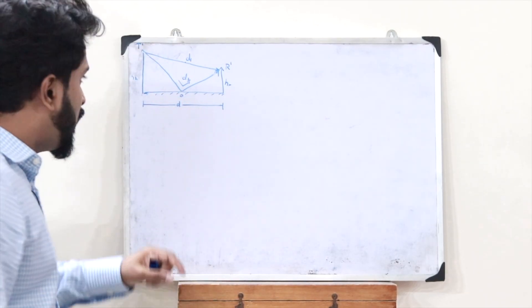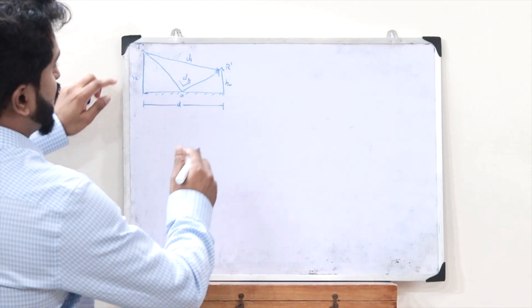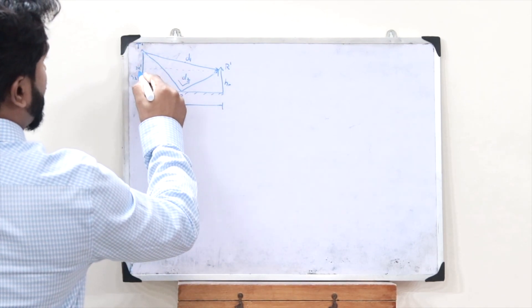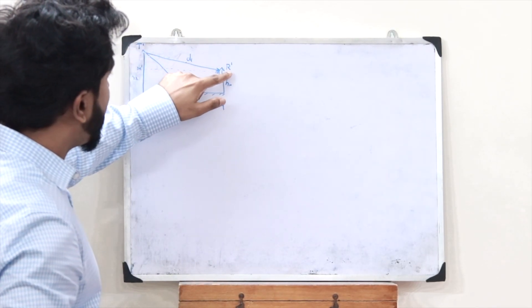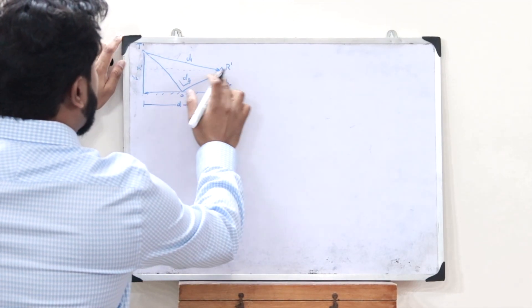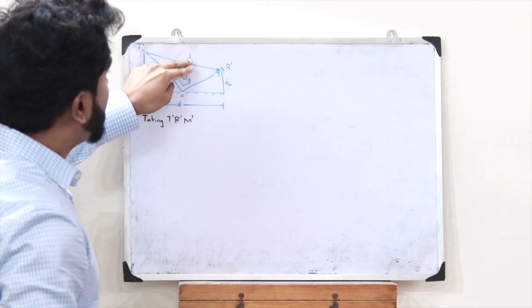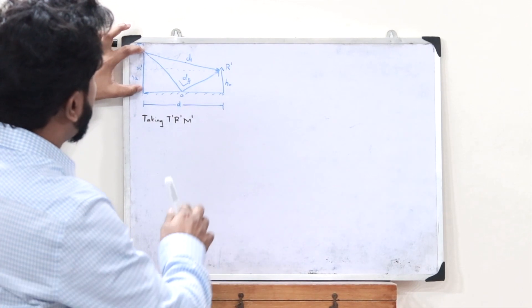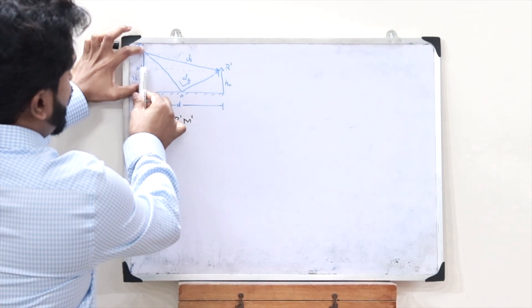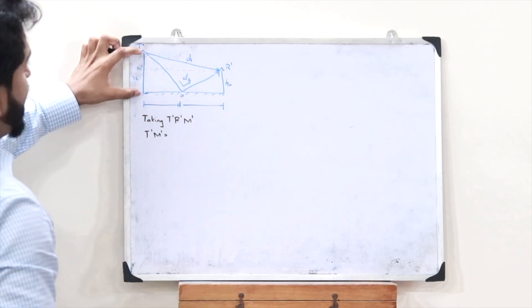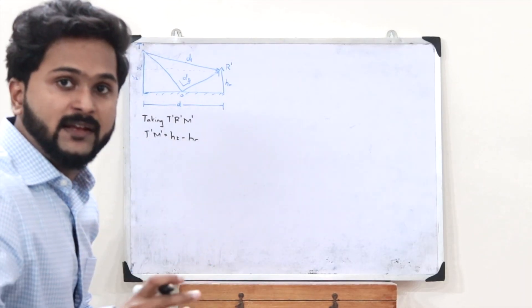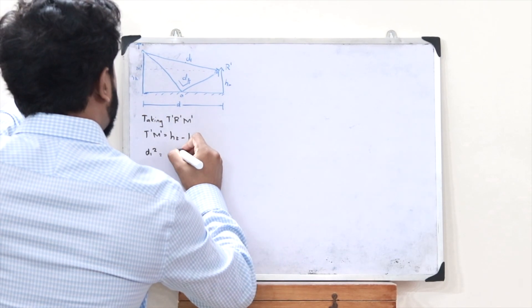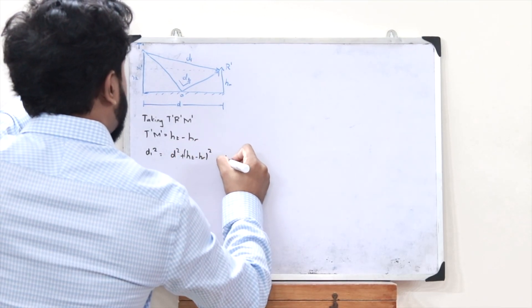We need to find D1 and D2 first. To find D1, we assume a right angle triangle T'R'M'. Applying Pythagoras theorem: the hypotenuse squared D1² equals altitude squared plus base squared. The base T'M' is HT minus HR, so D1² = D² + (HT − HR)². Let this be equation number one.